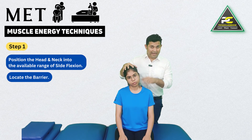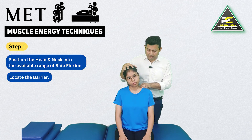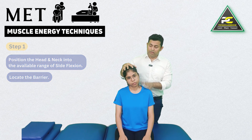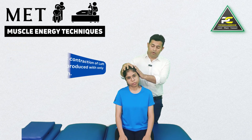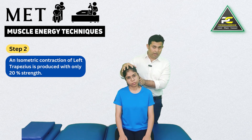The point where the therapist's hand perceives an increase in tissue resistance or stretch is the perceived barrier — this is where we stop and then ask for an isometric effort from the left upper trapezius muscle.